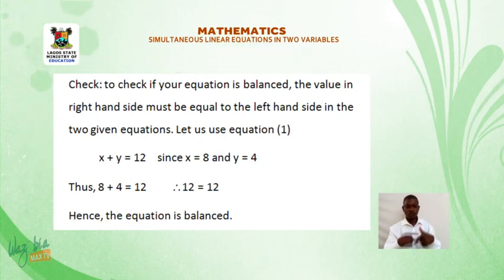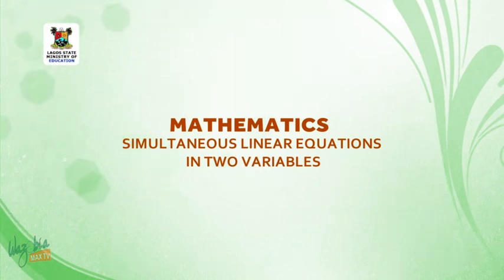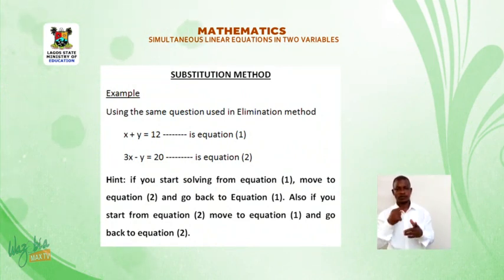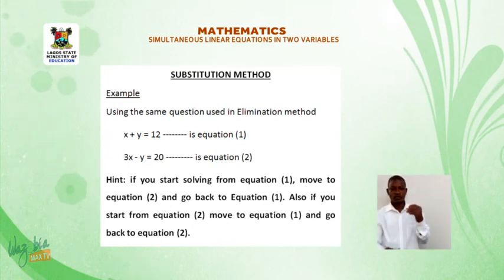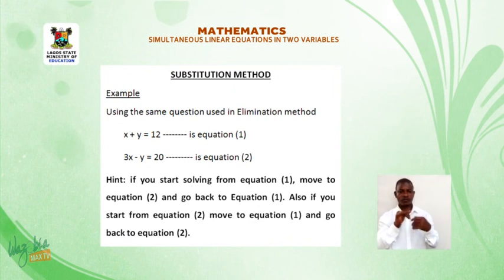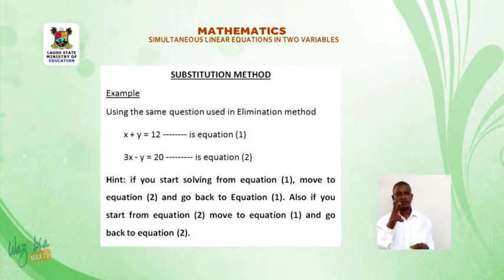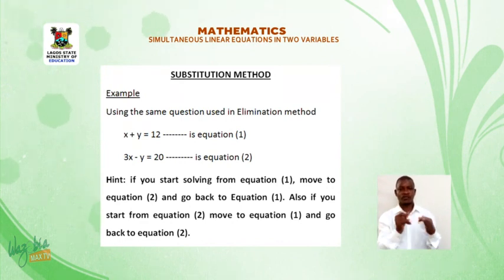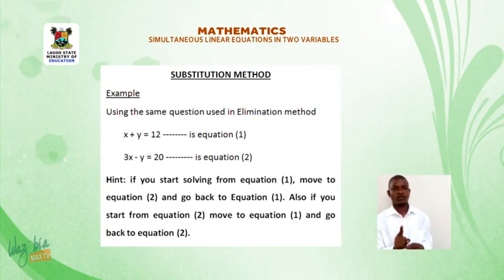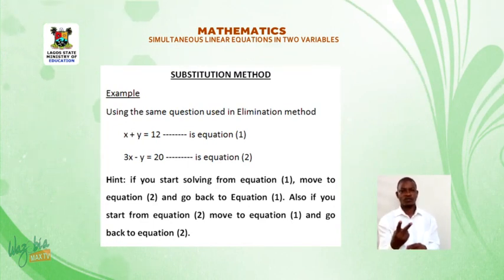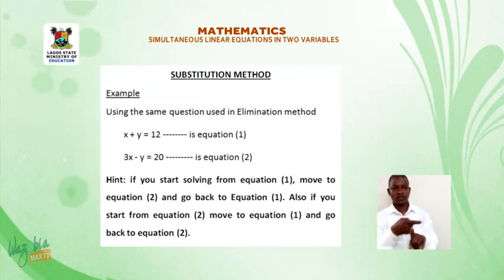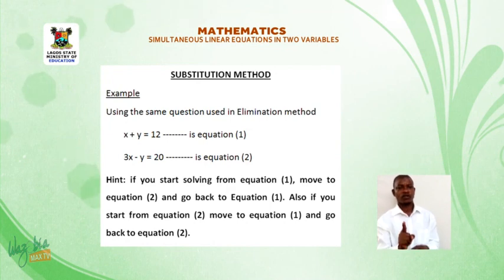Let us go on a short break. Welcome back. Substitution method. Example: using the same question used in the elimination method. x plus y is equal to 12 is equation 1, and 3x minus y is equal to 20 is equation 2. If you start solving from equation 1, move to equation 2 and go back to equation 1. Also, if you start from equation 2, move to equation 1 and go back to equation 2.